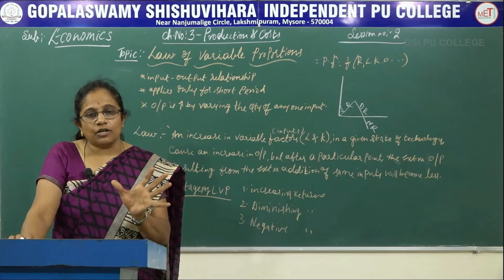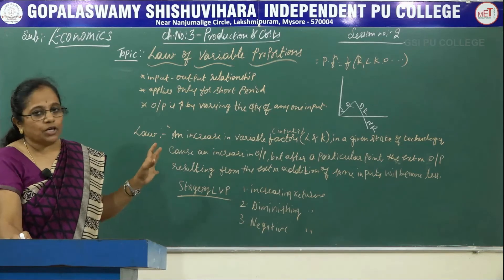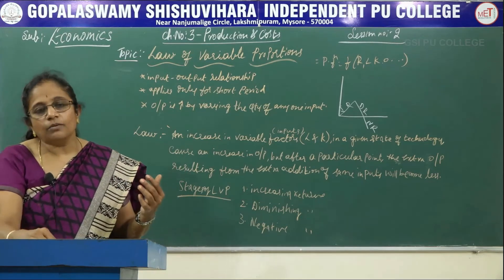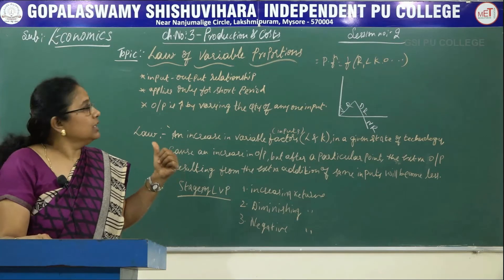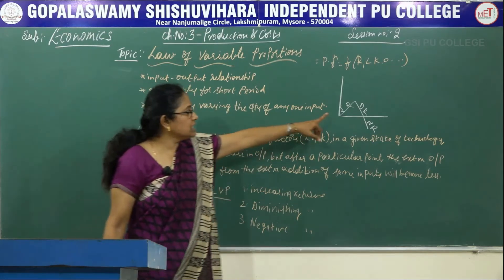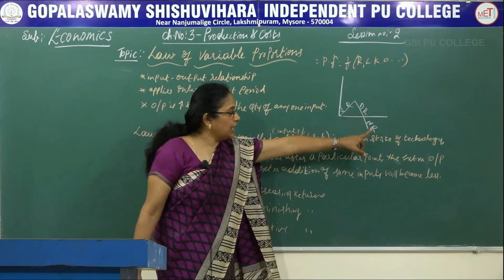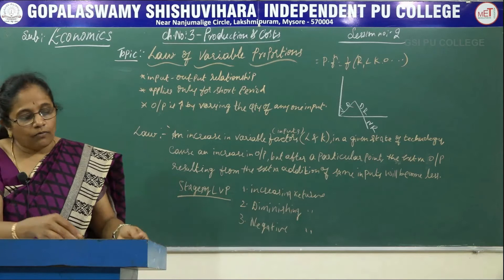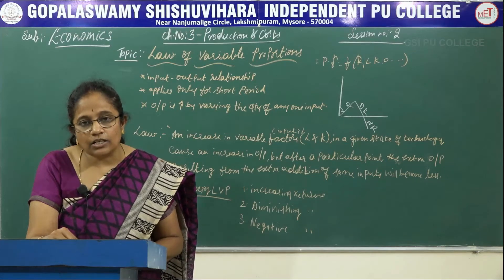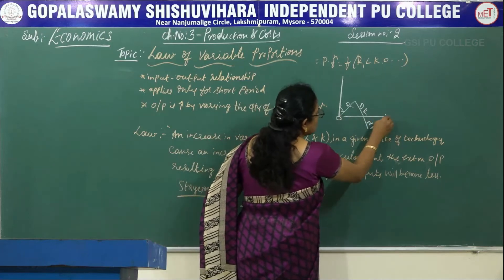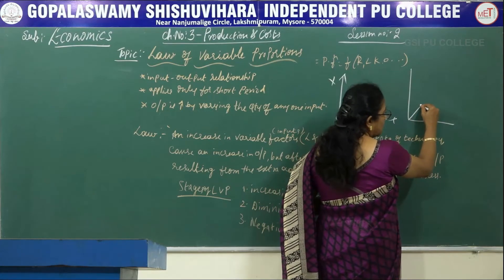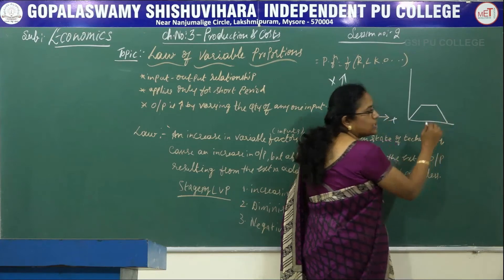This Law of Variable Proportions applies only to the shorter period, roughly 3 to 4 months. Now in the long run, we also have returns to scale with three stages: increasing returns to scale, constant returns to scale, and diminishing returns to scale. In the short run the stages are increasing, diminishing and negative; in the long run they are increasing, constant and diminishing.